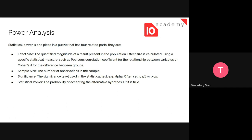What are those parameters? The effect size is the quantified magnitude of a result present in the population. It's a number roughly from 0.2 to 0.8 — maybe 0.5 in the middle. It measures how the effect of those parameters will be on the overall statistical analysis. Effect size is calculated using specific statistical measures, such as the Pearson correlation coefficient for relationships between variables, or Cohen's D for the difference between groups.